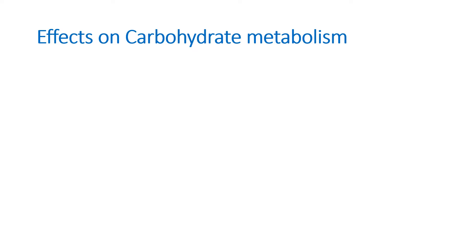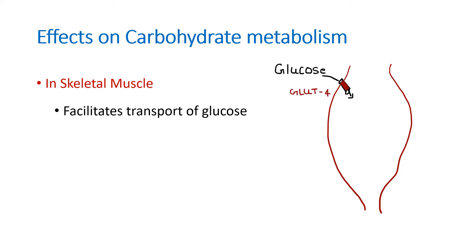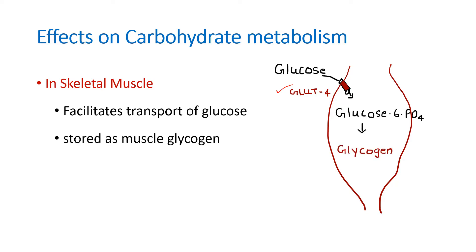In the skeletal muscle, insulin stimulates glucose entry via the GLUT4 transporter, and glucose is stored as muscle glycogen. So glucose is converted to glycogen inside the skeletal muscle. That is the effect of insulin on carbohydrate metabolism in the liver, adipose tissue, and skeletal muscle.